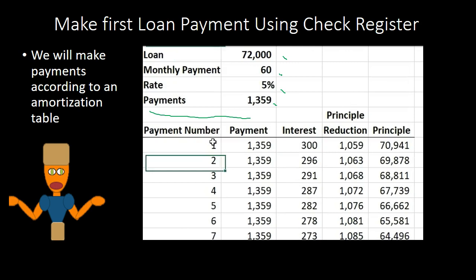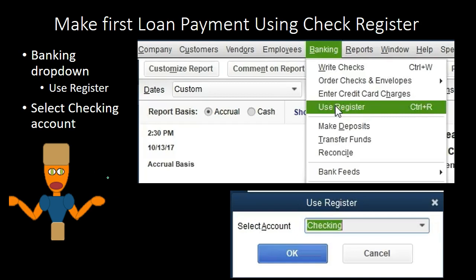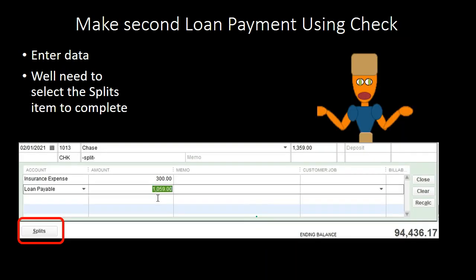Once we have the amortization table — looking something like this — we're dealing with a car payment type of loan, or similarly a mortgage, where the payments remain the same but the amount allocated to principal and interest differ. If we were to input this into QuickBooks, we would enter it into the register. Going to Banking, then Use Register, then the checking account register, we can enter this data.